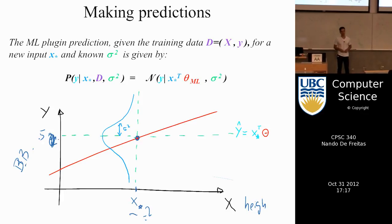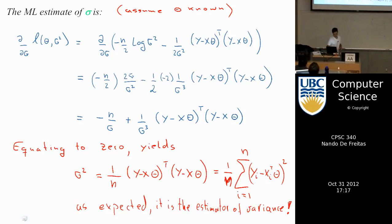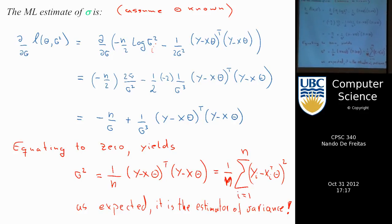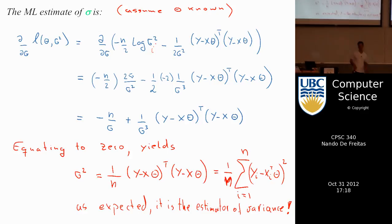All y's here share the same variance — that was the question asked earlier. If you wanted different variances, you'd introduce an index on each σ and compute the derivative with respect to each. You could even use a full multivariate Gaussian to add correlations. But the procedure is always the same: log, differentiate, equate to zero. This is like the old saying — once you teach someone how to fish, they'll catch fish forever. Log, differentiate, equate to zero is the formula for fishing in machine learning.